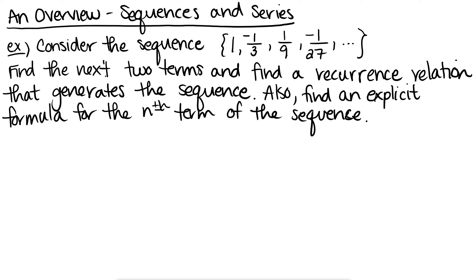All right guys, this is going to be a pretty quick section, so I'm just going to do two quick examples. It's really just an overview introducing you to what sequences and series are. A sequence is just a list of things — in our case, mainly numbers. They don't technically have to have any pattern, but the ones we'll look at will have patterns because they're more interesting. A series, on the other hand, is taking every number in a sequence and adding them together.